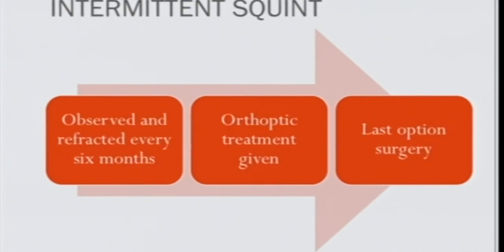There is controversy on when to operate in infantile esotropia — usually before one year of age is preferred to give some amount of stereopsis. In intermittent squints, the patient is observed and refracted every six months. Orthoptic treatment such as fusional exercises and vision therapy is given, along with accommodative improvement. Assess whether a high AC/A ratio is present.